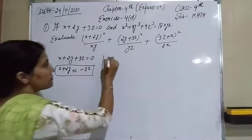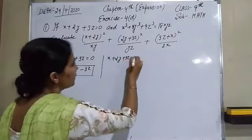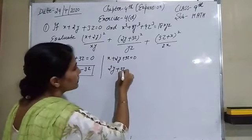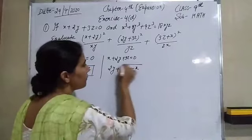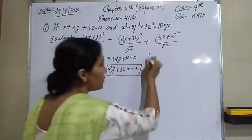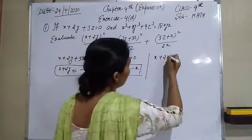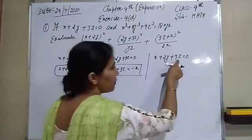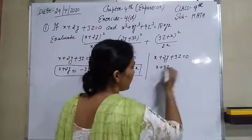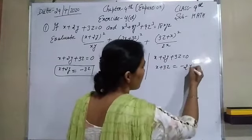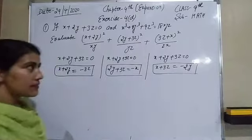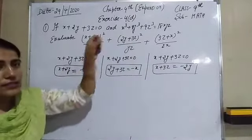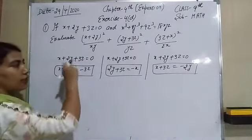Again from x + 2y + 3z = 0, we find the value of 2y + 3z. Here x is positive, so 2y + 3z = −x. Then again from the same equation, 3z + x = −2y. So we have found all three values: x + 2y = −3z, 2y + 3z = −x, and 3z + x = −2y.